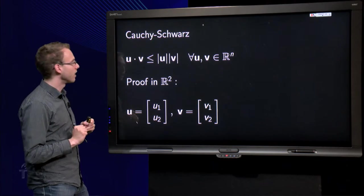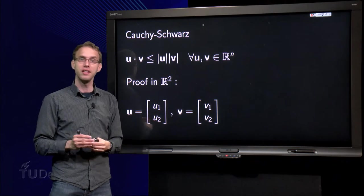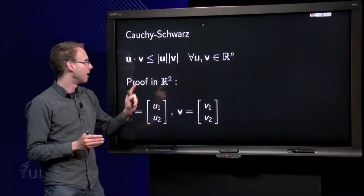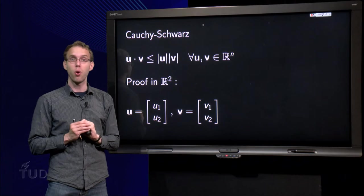So, what does this inequality tell us? It says that the inner product, u inner product v, between any two vectors in R^n, is smaller or equal than the length of u times the length of v. That's always true.